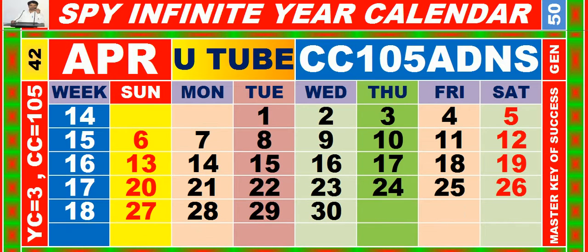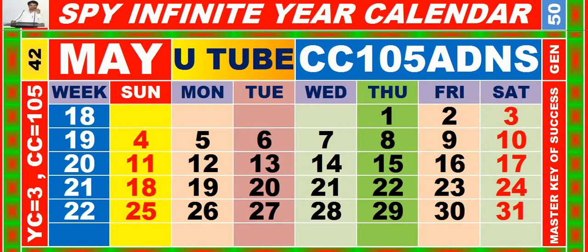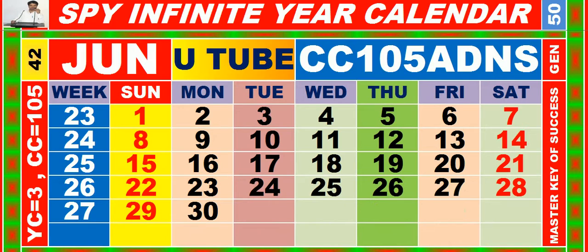Calendar for the month of April having calendar code equal to 105. Calendar for the month of May having calendar code equal to 105. Calendar for the month of June having calendar code equal to 105.